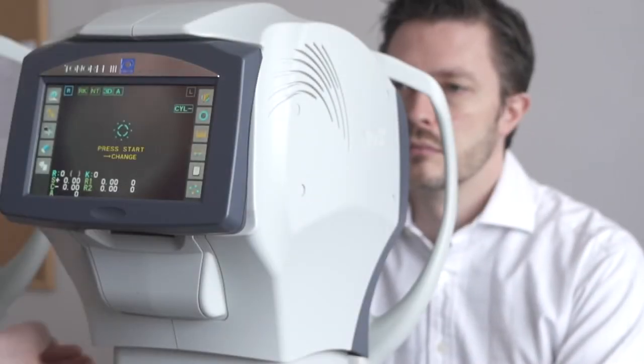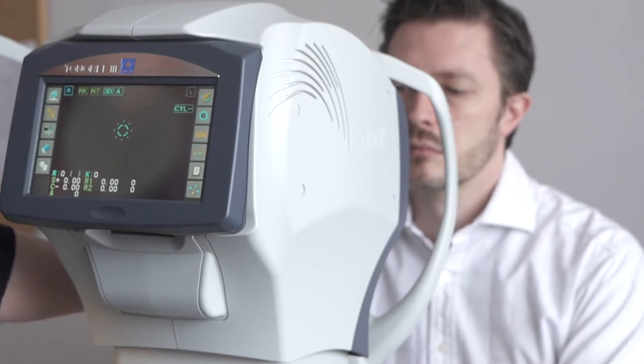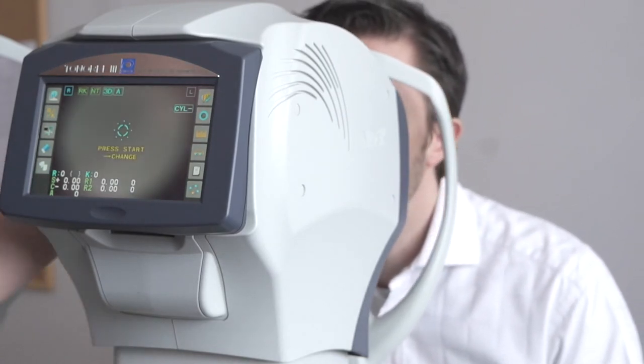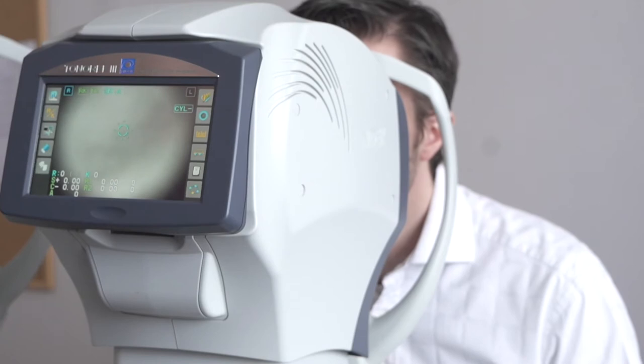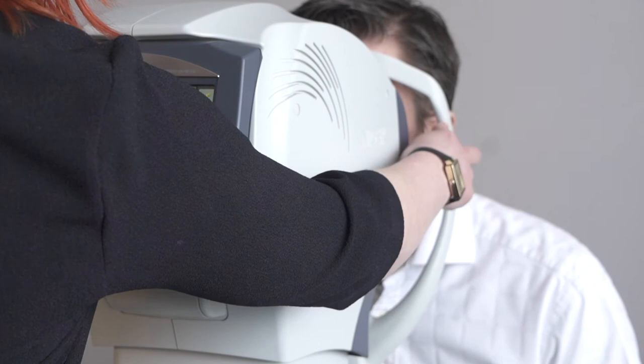The patient should be aligned by asking them to place their chin on the chin rest and forehead against the bar. We're looking to align the outside of the patient's eye with the canvas markers on the sides of the device.